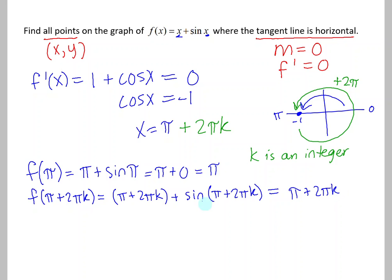That leaves us with pi plus 2 pi k, and of course the sine of pi, no matter how many circles we take, is 0, which of course we don't really need to write. So our x coordinate we have, and our y coordinate we have. So we'd write our set of points as the x coordinate, pi plus 2 pi k.